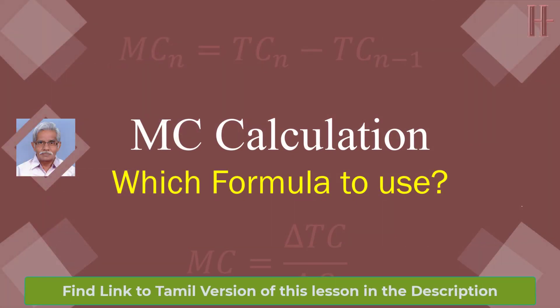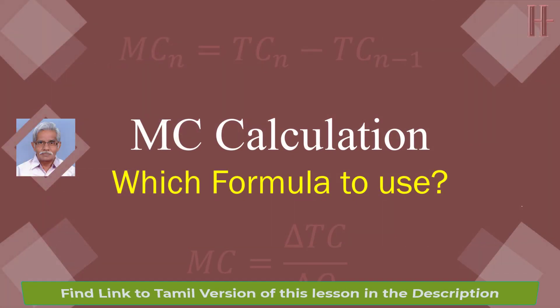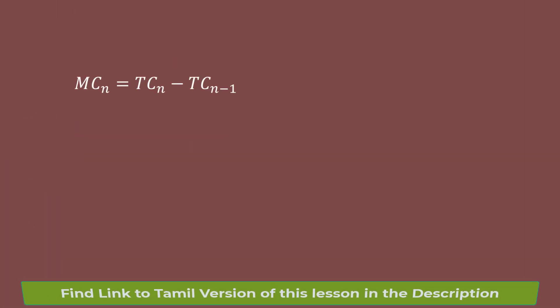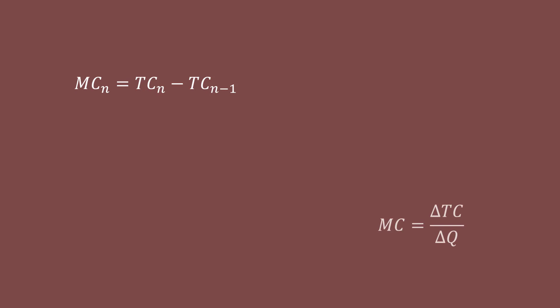In almost all my videos on the calculation of marginal cost, I use the formula: marginal cost of the nth unit equals total cost of the nth unit minus total cost of the n-1th unit. Some viewers have drawn my attention to another formula: marginal cost equals delta total cost divided by delta output.